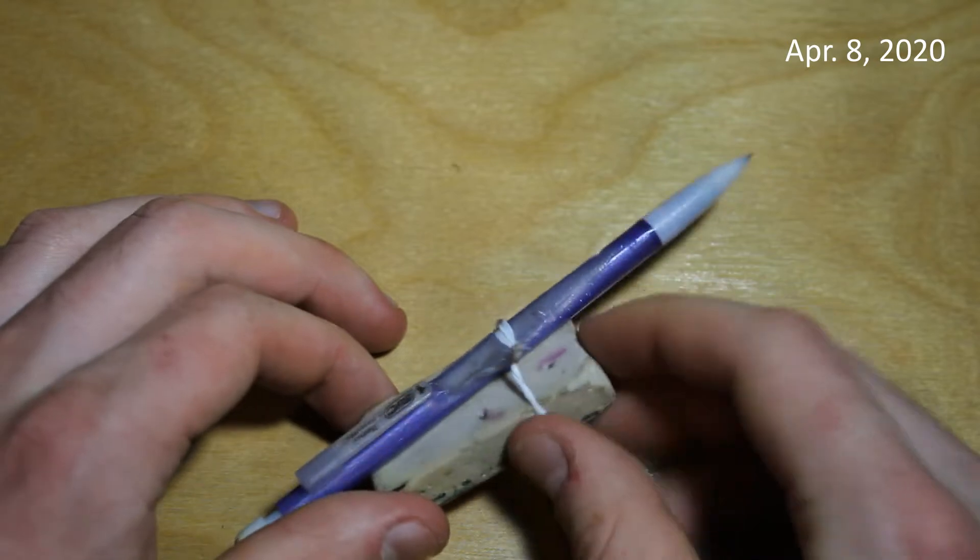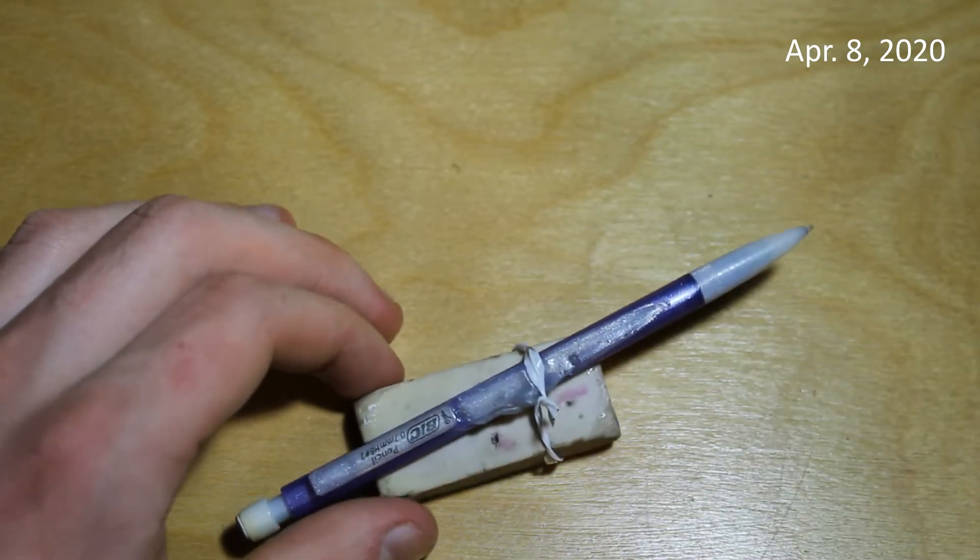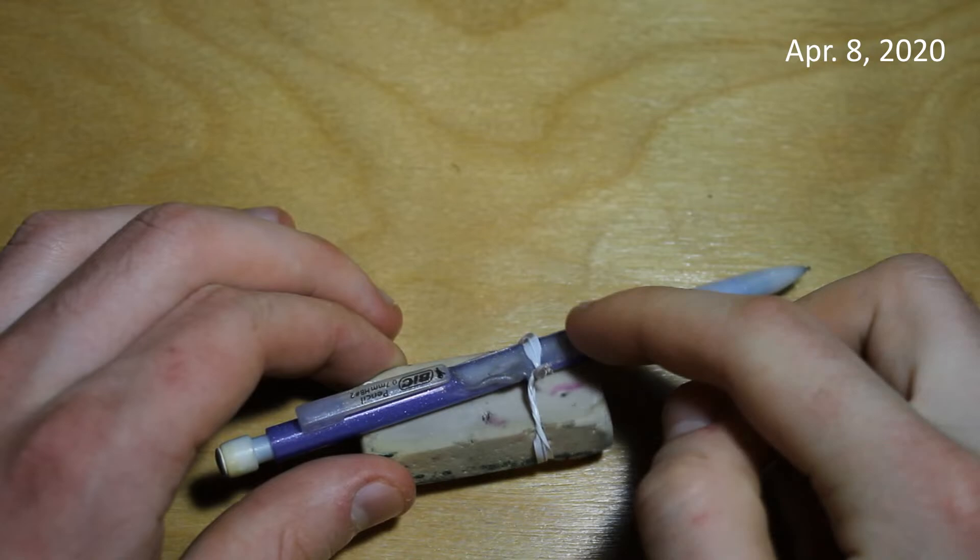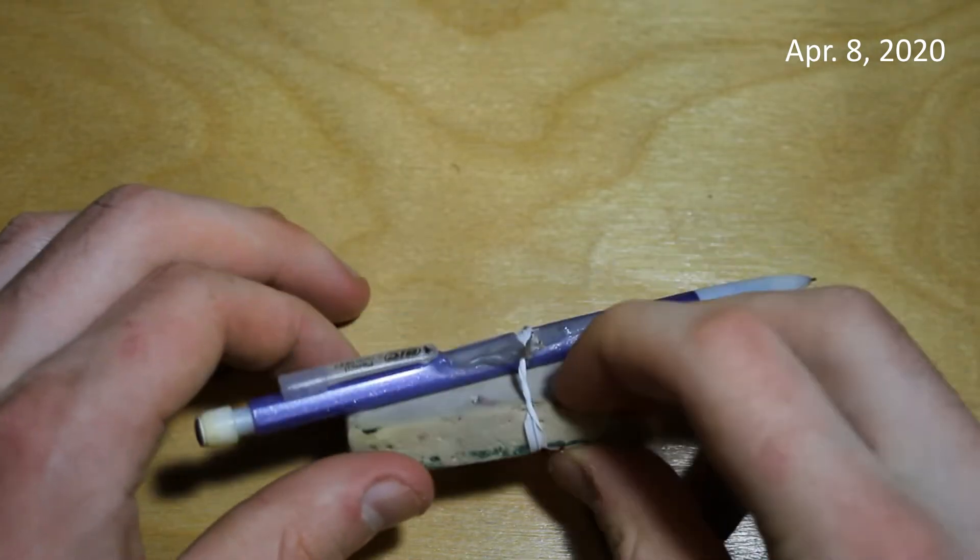So I twist-tied these together in an attempt to see if I can recreate this kind of melting of the plastic by the eraser.